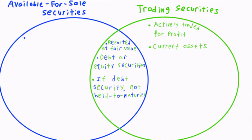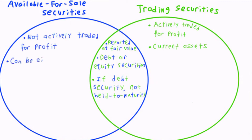On the other hand, available-for-sale securities are not actively traded for profit, but that doesn't mean they have to be long-term assets. Available-for-sale securities can be either current or long-term assets.